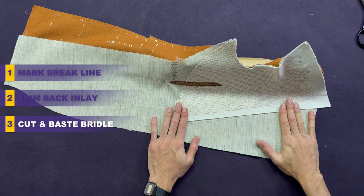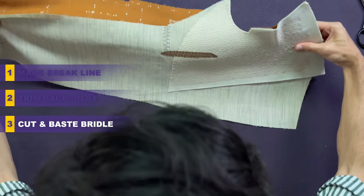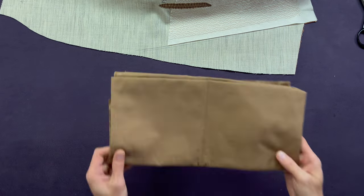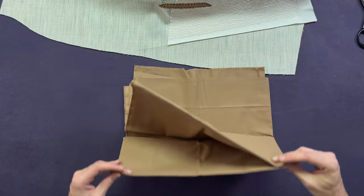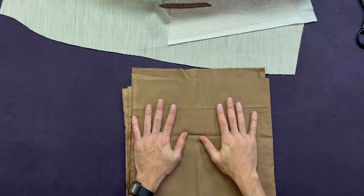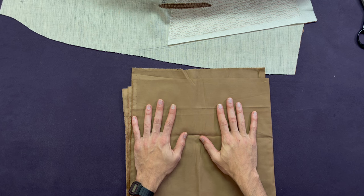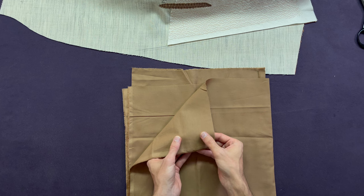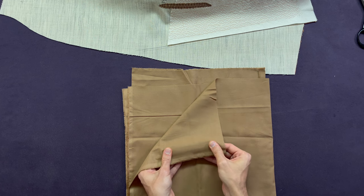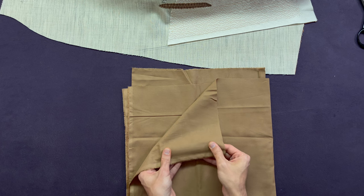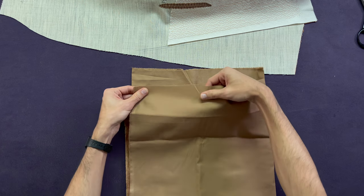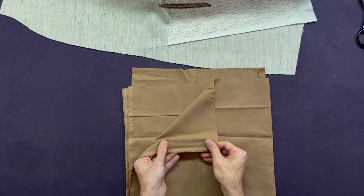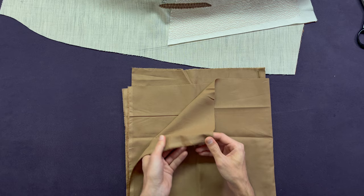Now it's time to cut the bridle. Move your forepart and your block away and grab your silicia. If you're working with our foundation bundle, you will have this silicia included. If you're working with your own materials, try to find a densely woven, thin, cotton material with as little give as possible. If you look at the cross grain here, it's quite flexible. But if you look at the selvedge side, it's not flexible at all. That's the side that we're going to use.